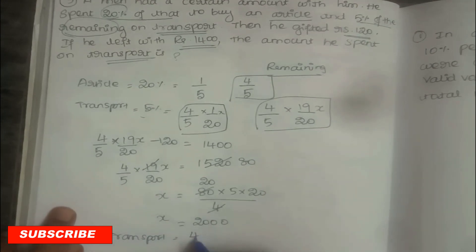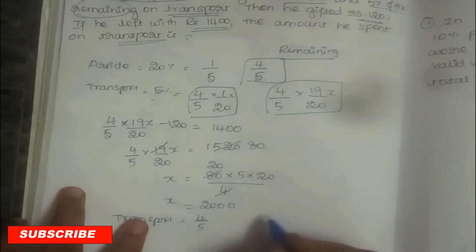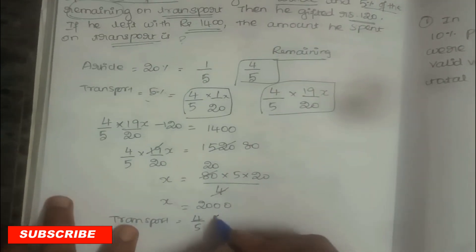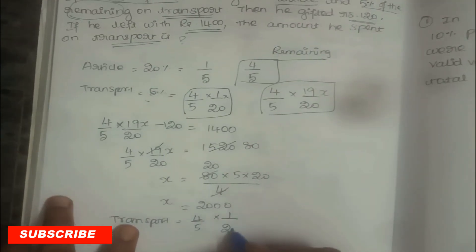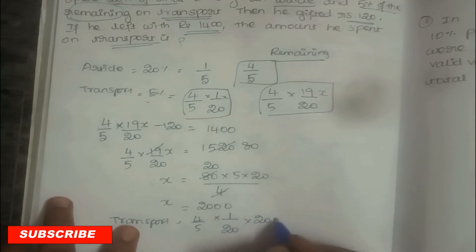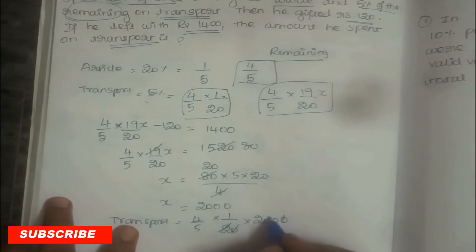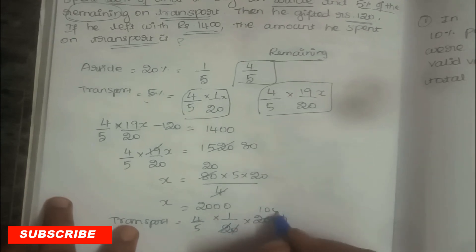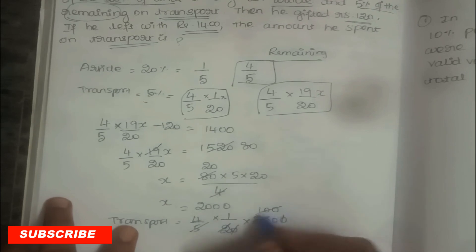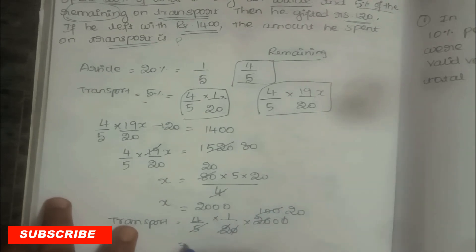Calculating: (4/5) × (1/20) × 2,000 = 80. So the amount spent on transport is Rs. 80.